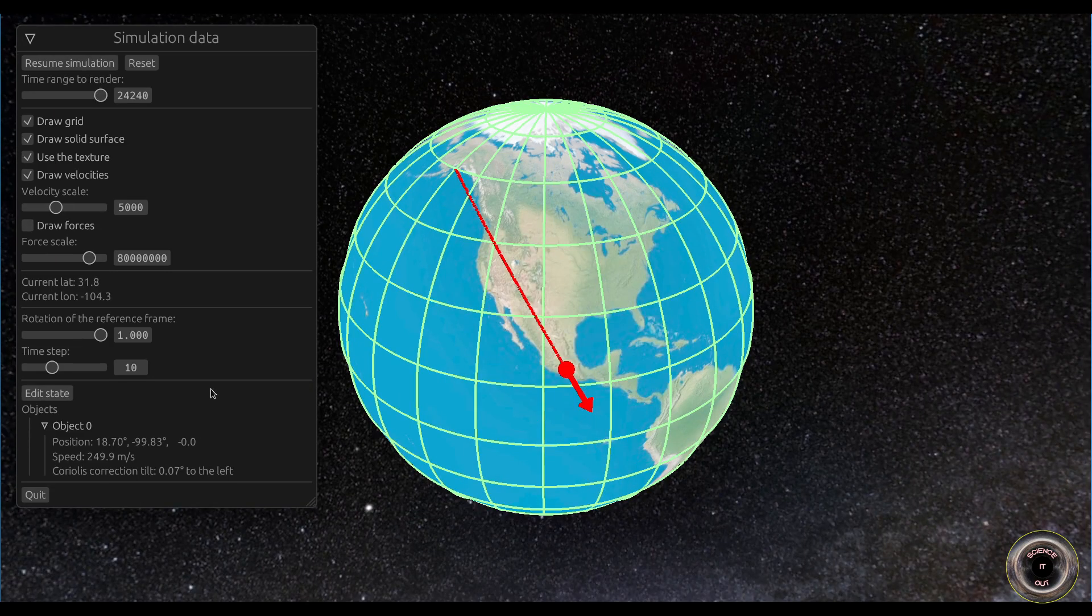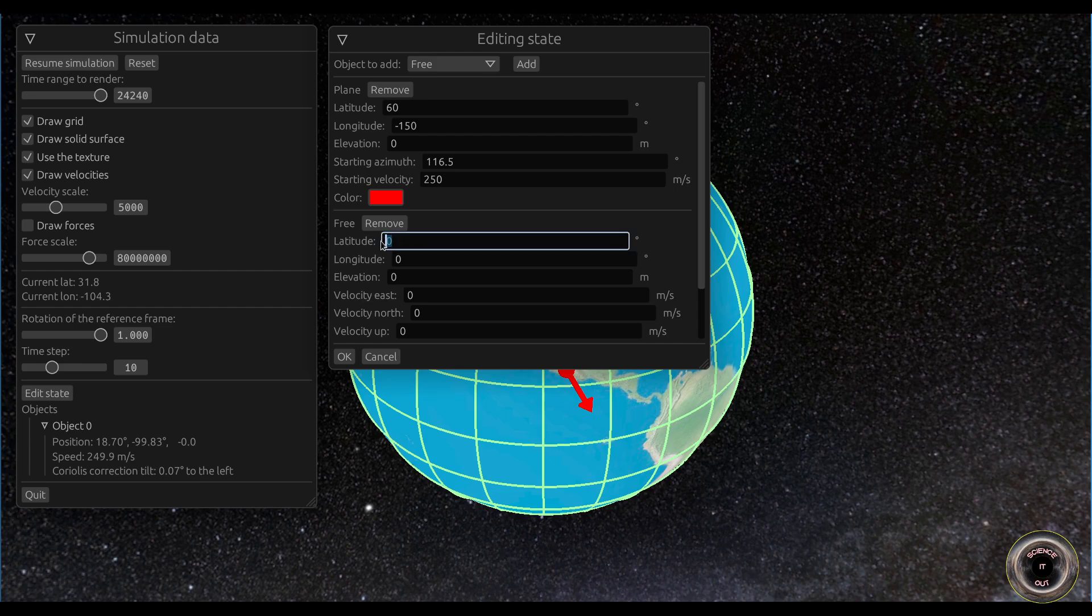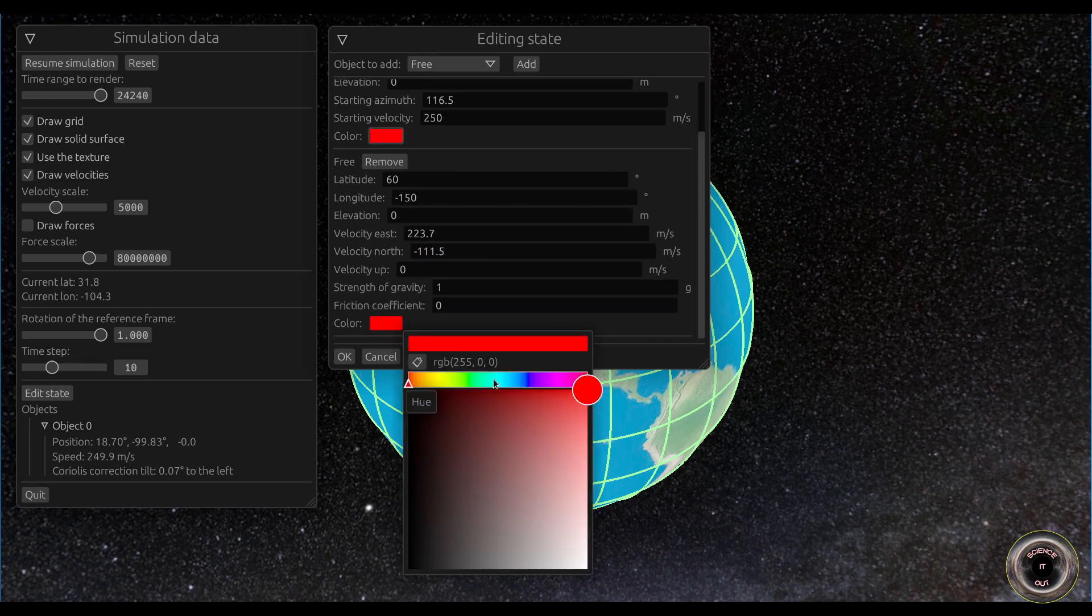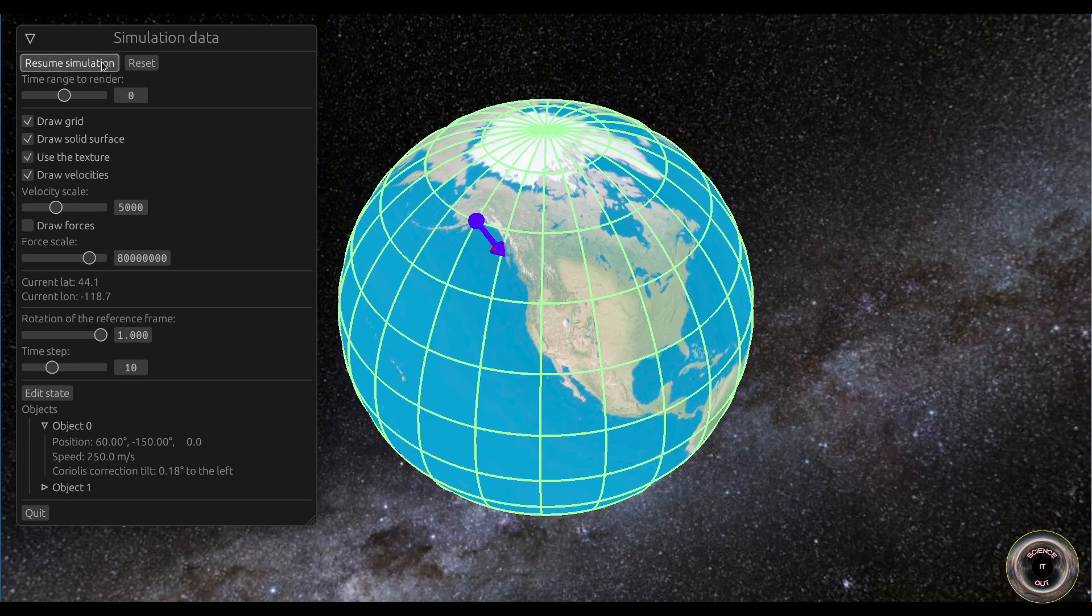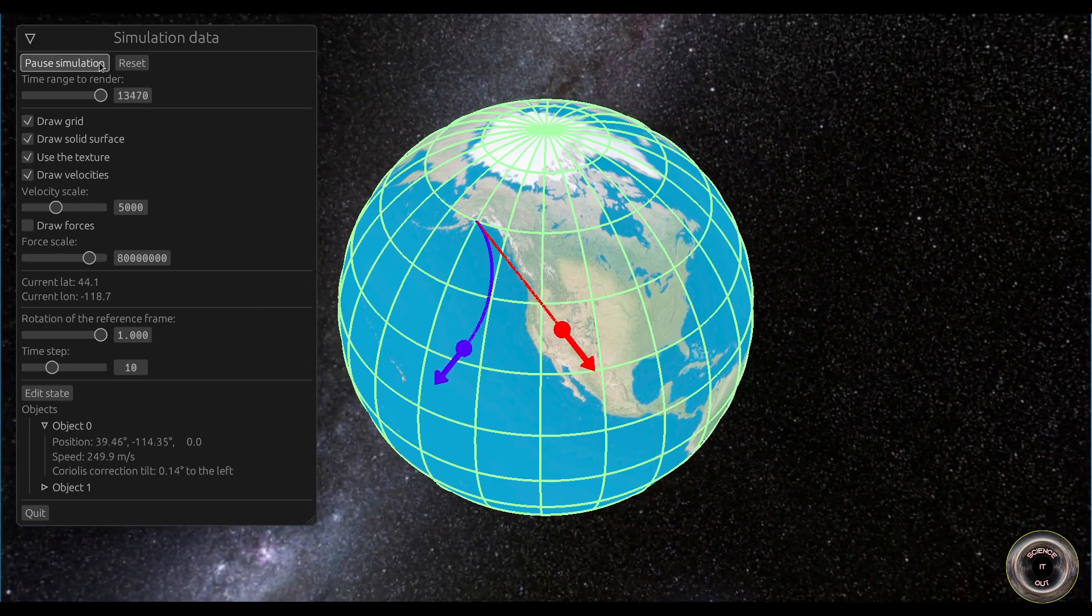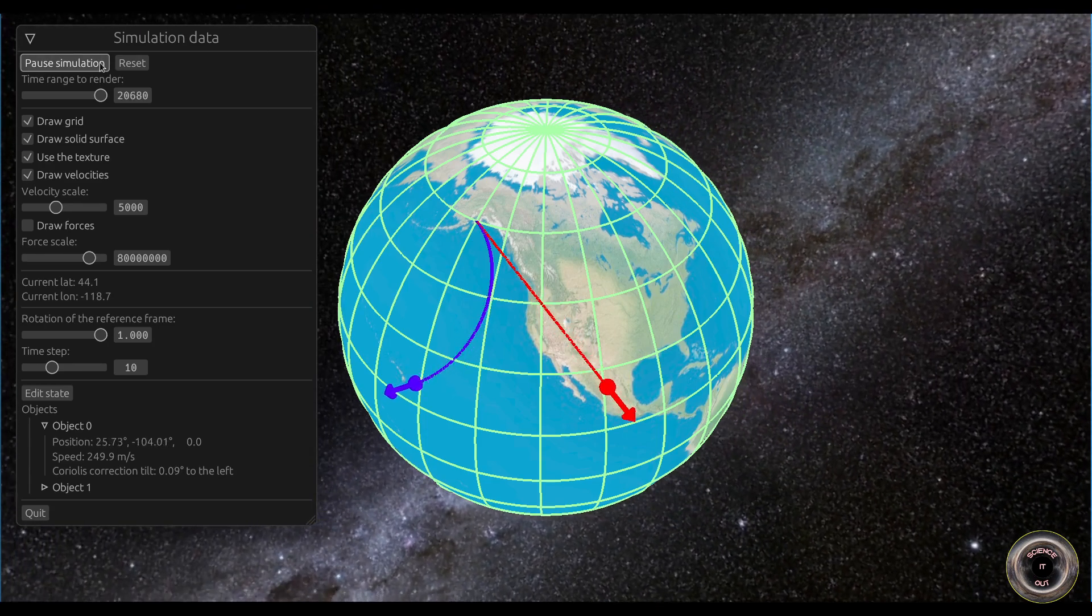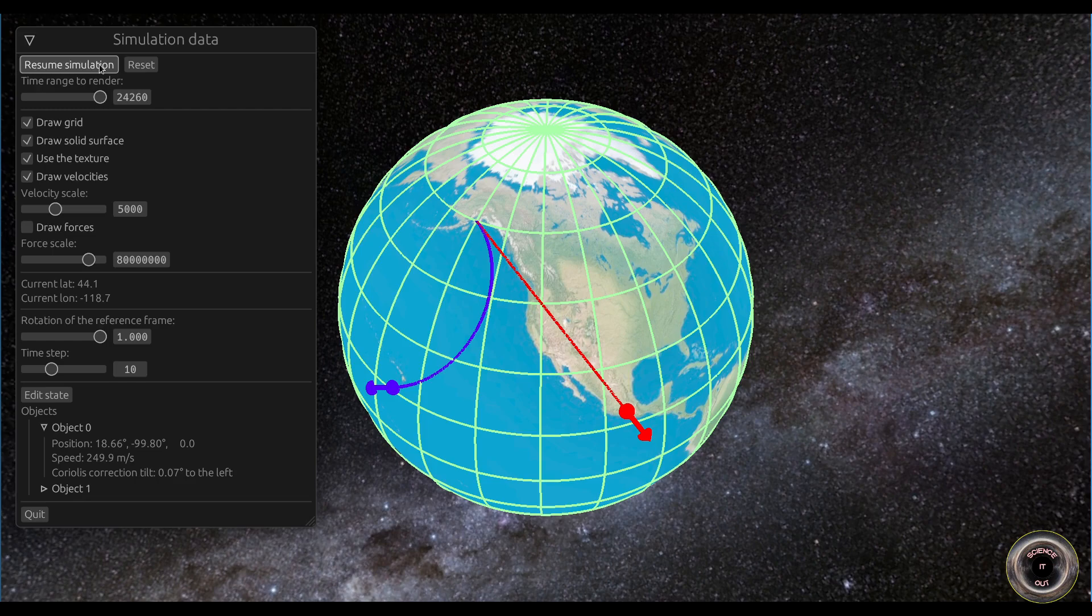What if the plane did not correct for Coriolis? We can actually see in the simulator. We can add an object that will start in the same direction, with the same speed as the plane, but it will then move without this correction. Let's run the simulation with that. And we can see that it gets quickly deflected by the Coriolis force, and when the plane reaches Mexico City, the non-correcting object is somewhere near Hawaii. So the Coriolis correction, while small, can add up to a large effect over bigger timescales.